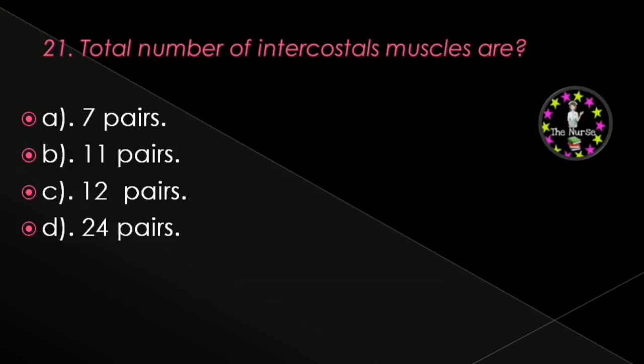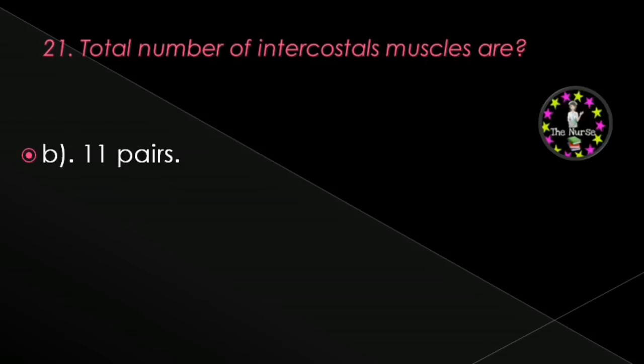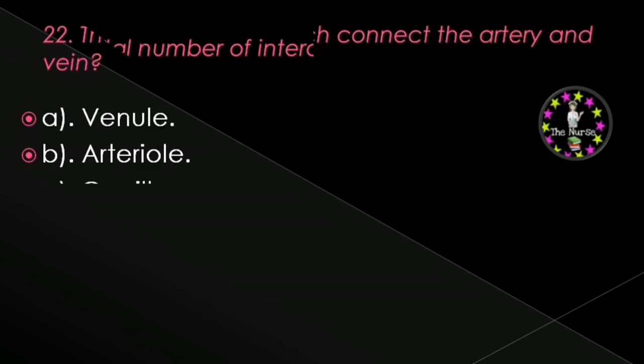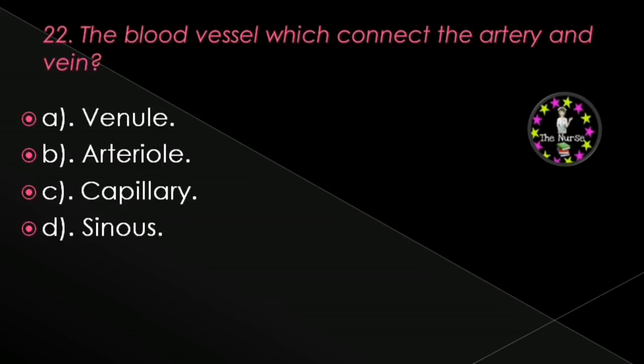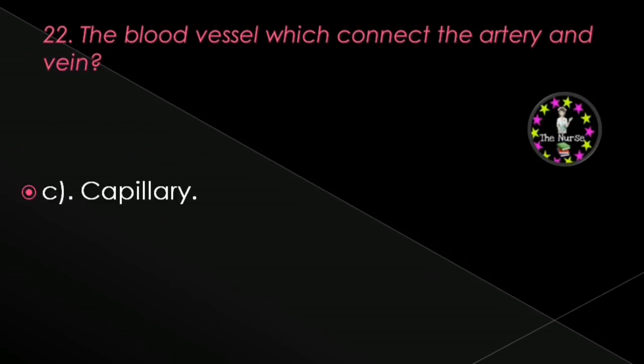Next question: Total number of intercostal muscles are — 7 pairs, 11 pairs, 12 pairs, or 24 pairs? Correct answer is 11 pairs. Next question: The blood vessels which connect the artery and vein — venule, arterial, capillary, or sinus? Correct answer is capillaries.